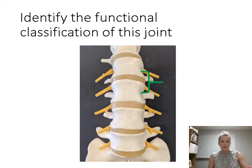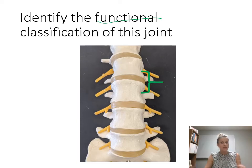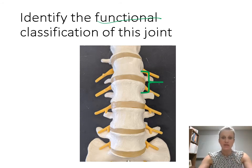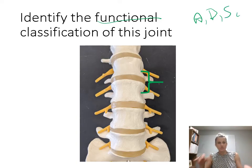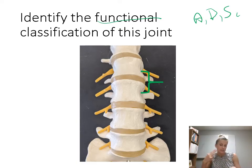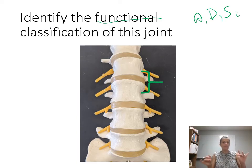When classifying joints, we can do so structurally or functionally. The functional classifications describe the amount of movement a joint allows — the three classifications are amphiarthrosis, diarthrosis, and synarthrosis. If a question asks for the functional classification, those are your choices. If it asks for the structural classification, the choices are fibrous, cartilaginous, and synovial. The specific examples match up: fibrous joints are synarthrosis; cartilaginous joints are amphiarthrosis; synovial joints are diarthrosis.